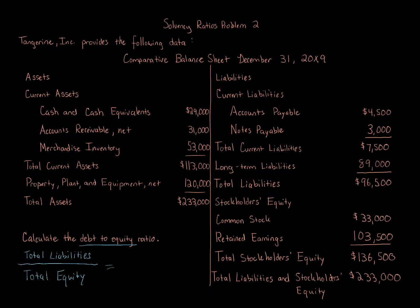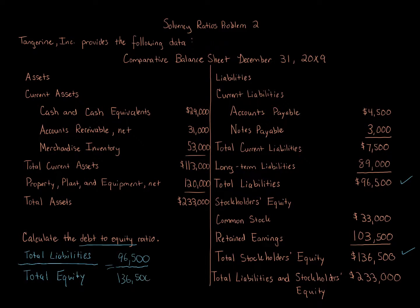Here it's just total liabilities over total equity. We're given total liabilities of $96,500, divided by total stockholders' equity of $136,500. Doing that calculation, we get 0.71. That is our ratio — 0.71.